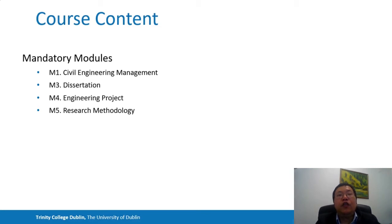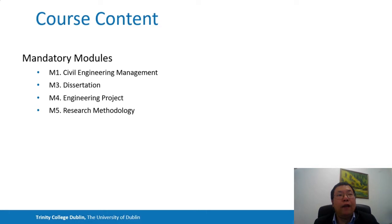In addition to the modules offered by individual disciplines, we also offer four mandatory modules: the M1 civil engineering module, the M3 dissertation module, the M4 engineering project module, and the M5 research method module.